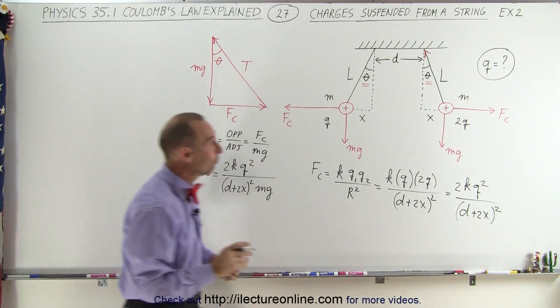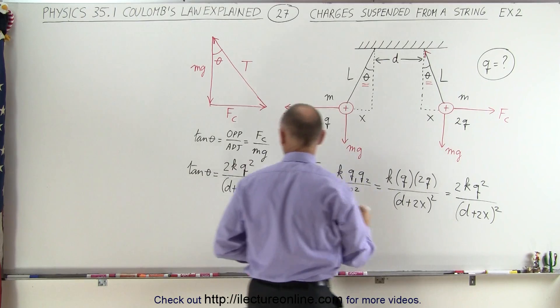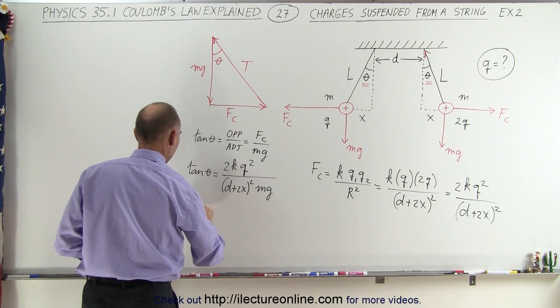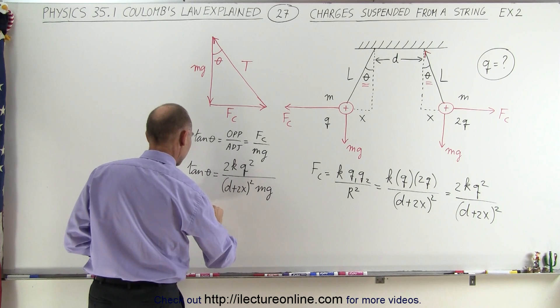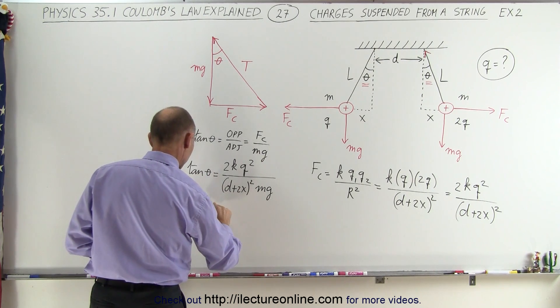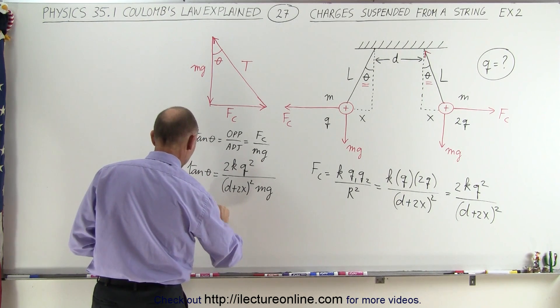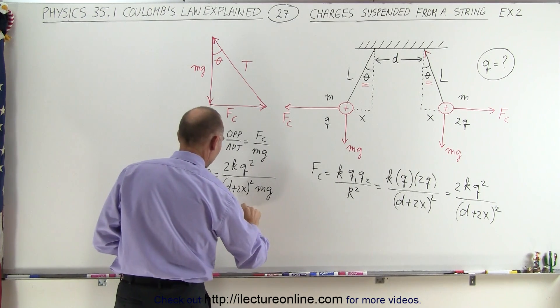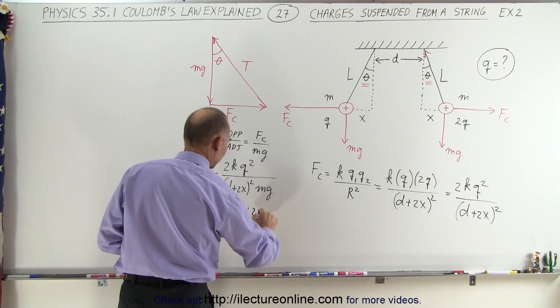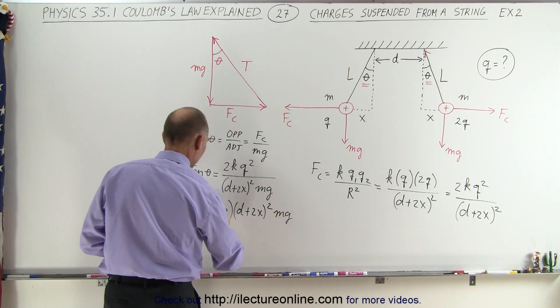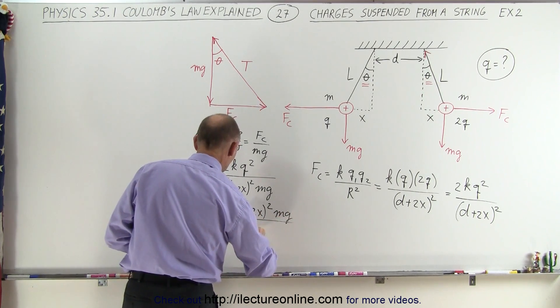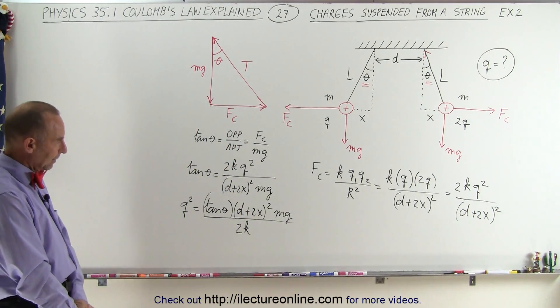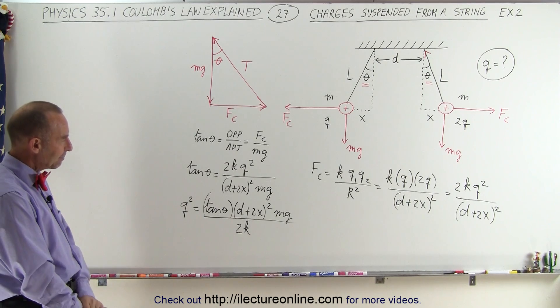And since we're looking for q, we can then solve this equation for q. We can say that q² is equal to the tangent of theta multiplied times the quantity (D + 2X)² times mg, all divided by 2K.